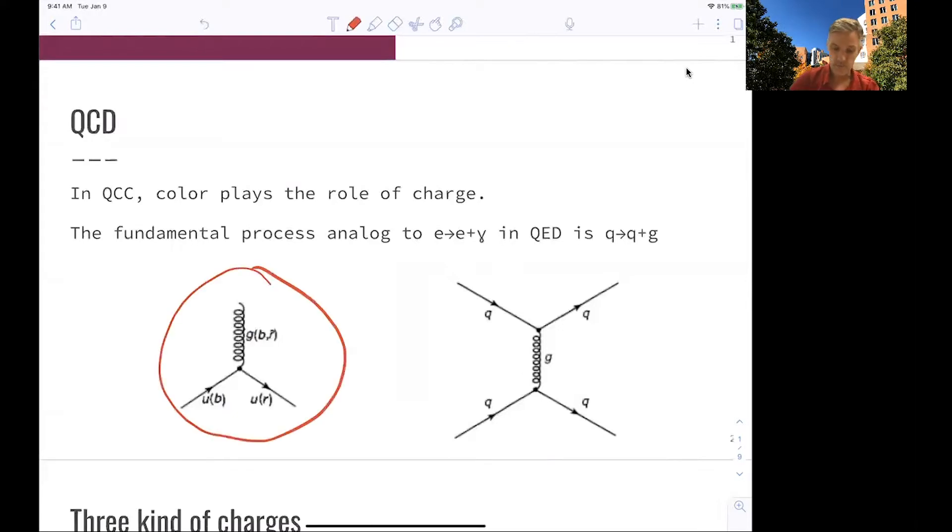which is very similar to a photon being radiated from an electron. Here we have a gluon being radiated from quarks. And when this happens, the quark changes its color. So here you have a quark with color blue and a quark with color red.